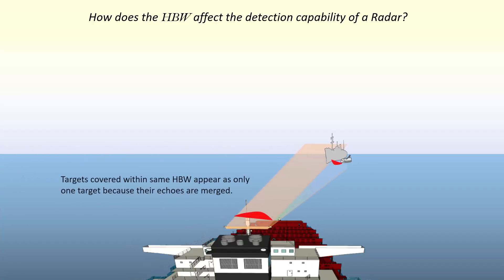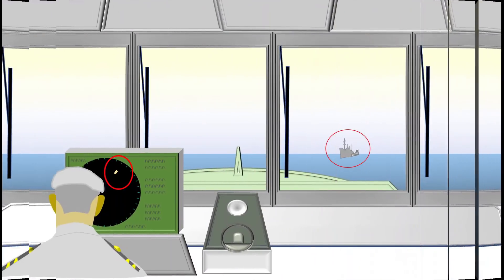If the two targets have a separation which is lighter than the VBW, then they show up on the screen as one single target only.